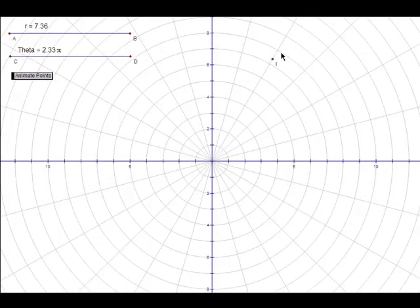In the polar coordinate system, each point is determined by an angle and a distance.